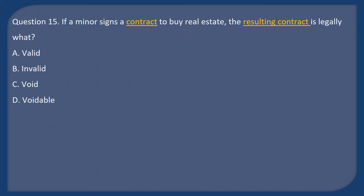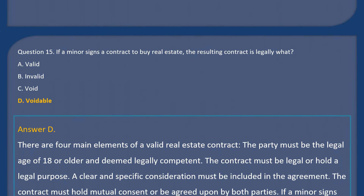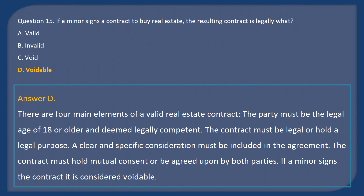Question 15: If a minor signs a contract to buy real estate, the resulting contract is legally what? A. Valid. B. Invalid. C. Void. D. Voidable. Answer: D. There are four main elements of a valid real estate contract: the party must be the legal age of 18 or older and deemed legally competent; the contract must hold a legal purpose; a clear and specific consideration must be included; and the contract must hold mutual consent. If a minor signs the contract, it is considered voidable.